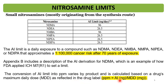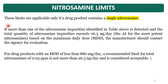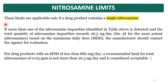These limits are applicable only if the product contains a single Nitrosamine. If more than one Nitrosamine impurity is identified and detected, and the total quantity exceeds 26.5 nanogram per day — the limit of the most potent Nitrosamine based on the MDD — the manufacturer should contact the agency for evaluation. For drug products with an MDD of less than 880 mg per day, a recommended total Nitrosamine limit of 0.03 ppm (not more than 26.5 ng/day) is considered acceptable.